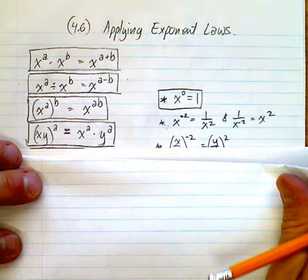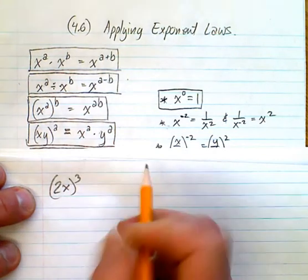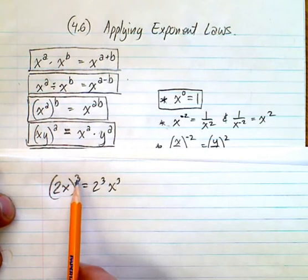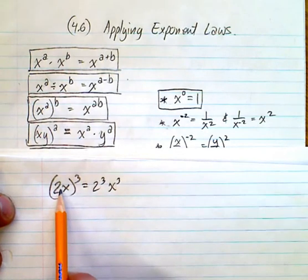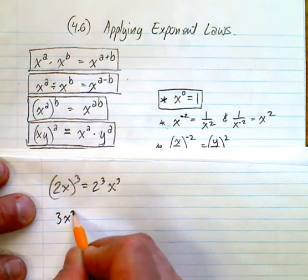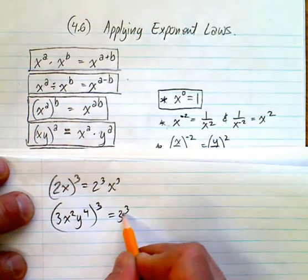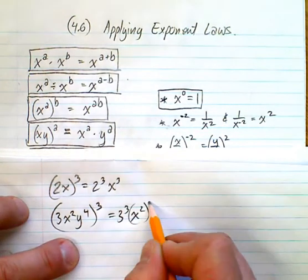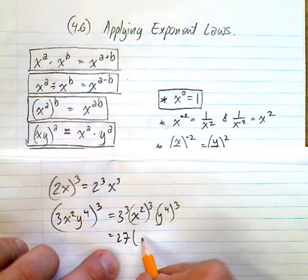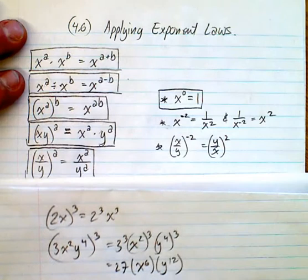This is the crucial one I wanted to show you. If you have something like 2x to the power of 3, you have to understand that's 2 to the power of 3 times x to the power of 3. You distribute that 3 onto each of those things. For example, 3x squared y to the power of 4, all to the power of 3, would be 3 cubed times x squared to the power of 3 times y to the fourth to the power of 3 - that's 27 times x to the 6th times y to the 12th.